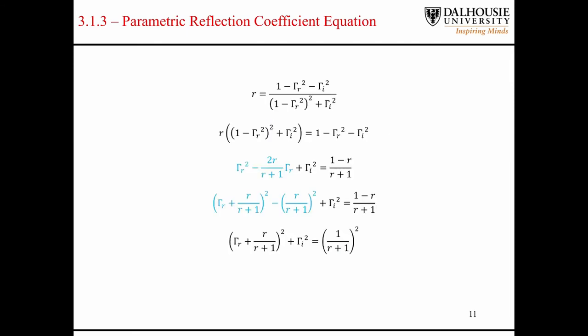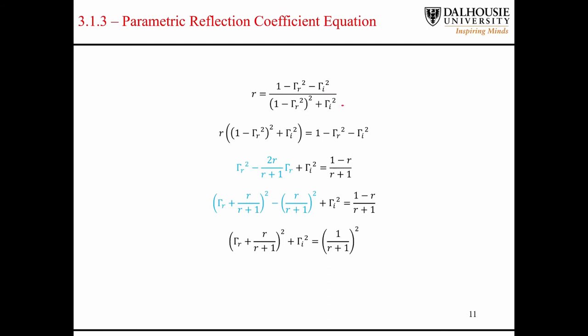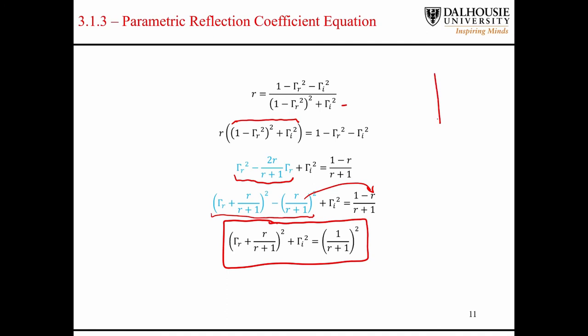Starting with the expression for the real part of the mapping, we multiply both sides by the denominator, expand, and complete the square. Bringing terms to the right-hand side, we get an equation in terms of the real and imaginary parts of the reflection coefficient that corresponds to the equation of a circle. This is where the constant resistance circles come from — circles centered on the horizontal axis in the reflection coefficient plane.